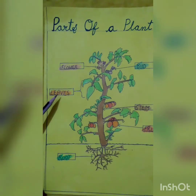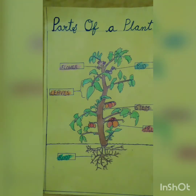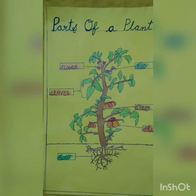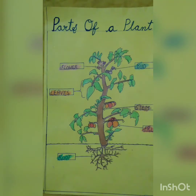If I talk about the function of leaves, leaves collect sunlight and make food for the plant. Leaves are also known as the food factory of a plant. Every plant has different kinds of leaves. Some examples of leaves that we eat are spinach and fenugreek leaves.